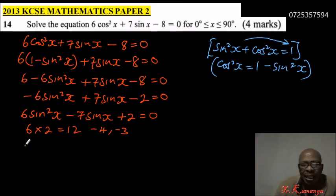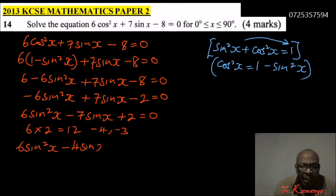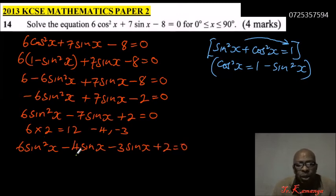So we rewrite our quadratic equation and say this is 6 sin²x. Now instead of -7 sin x, here we write -4 sin x - 3 sin x, and then we have +2. We have not changed the equation because -4 sin x - 3 sin x will still give you -7 sin x.